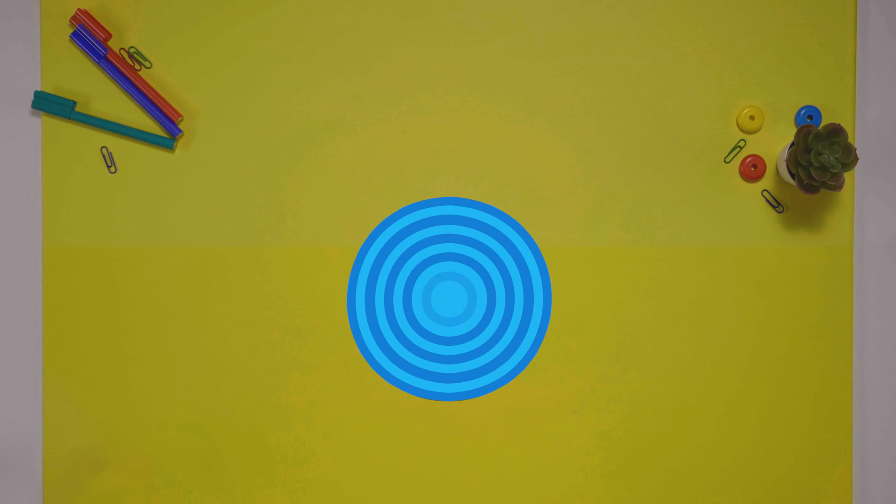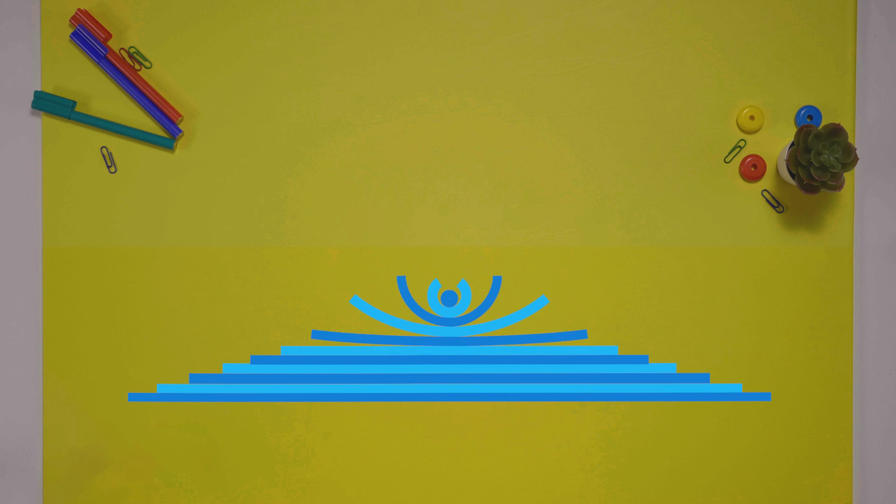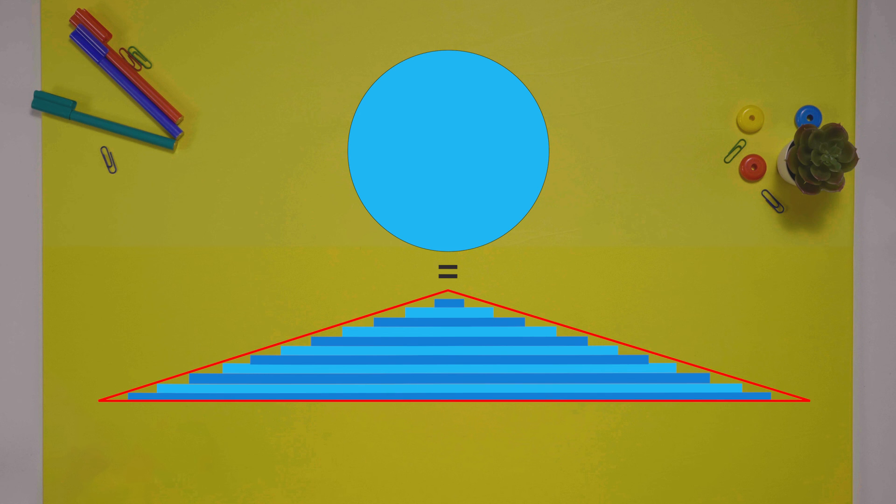Imagine creating narrow strips parallel to the circle's boundary, then spread them out and stack them on top of one another. The total area of the circle will be the same as this sort of a triangular shape.